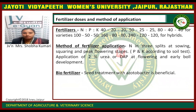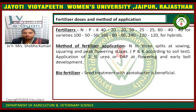Fertilizer dose and method of application. Fertilizer NPK ratios are 40-20-20, 50-25-25, and 80-40-40 depending on the varieties. For hybrids, the ratios are 100-50-50 or 160-80-80. Method of fertilizer application: Nitrogen is applied in three splits — at sowing, squaring, and peak flowering stage. The total amount of nitrogen fertilizer is divided into three parts: the first is applied at sowing time as a basal dose, the second at squaring time, and the third at the time of the flowering stage. Phosphorus and potassium are applied according to soil test. Application of 2% urea or DAP at flowering is recommended for early boll development. For biofertilizer, seed treatment with Azotobacter is beneficial.